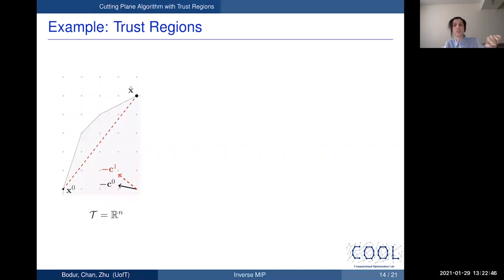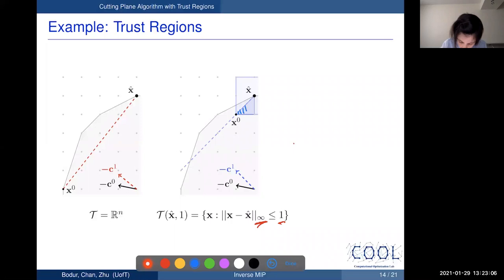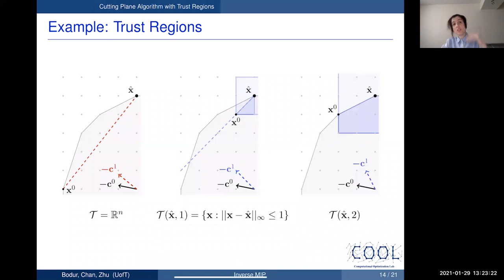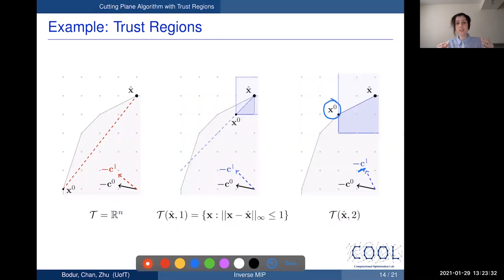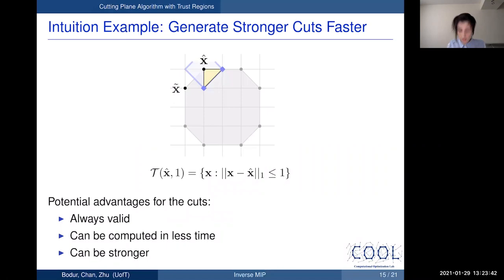We define trust regions centered around the target point x-hat, using any norm and any diameter. By intersecting the forward feasible set with this trust region, the resulting restricted forward feasible set is more likely to have fewer extreme points, reducing the number of points needed to build a generator set, and making the restricted MIPs easier to solve than the original MIPs. Here's an example using the L-infinity norm with radius 1: restricting the search yields an interior point x0 closer to x-hat, providing a stronger cut.